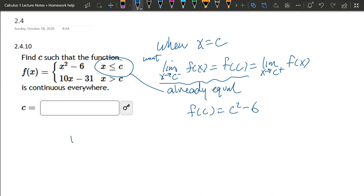Now the right side, the limit as x approaches c from the positive side of f(x). We're using the second piece where x is greater than c. And that's 10c minus 31, and I need these to be equal.